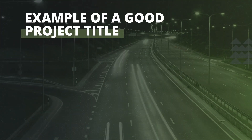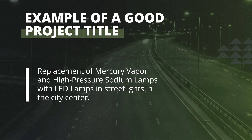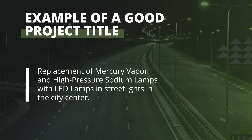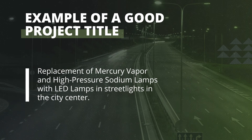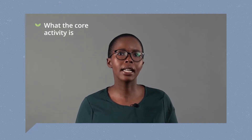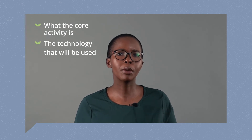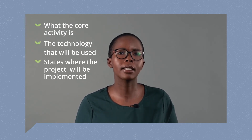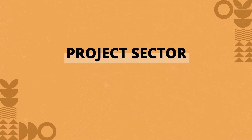An example of a good project title would be: 'Replacement of mercury vapor and high-pressure sodium lamps with LED lamps in street lights in the city center.' This intervention title includes what the core activity is, the technology that will be used, and states where the project will be implemented.